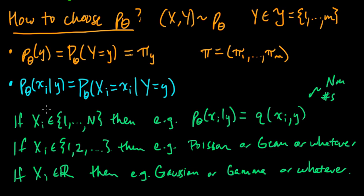And then, so each of these, you'll make this choice, a choice like this, for each i, for each of the dimensions. And so you can mix and match, right? I mean, you don't have to choose the same distribution for all the dimensions.